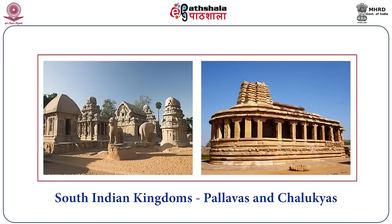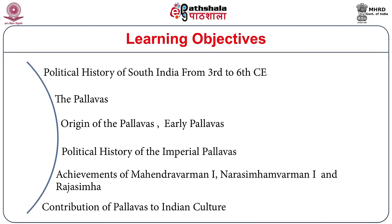The Pallavas and Chalukyas, who rose to prominence in the middle of 6th century AD, played a key role in political as well as cultural history of the South. The learning objectives of the module are the political institutions of South after the Sangama and Satavahana ages, to know about the background for the rise of the Pallavas, and the origin and early history of the Pallavas, the political history of the Pallavas, and to know about the important achievements of the rulers Mahendra Varman I, Narsimha Varman I and Narsimha Varman II, also known as Rajasimha.